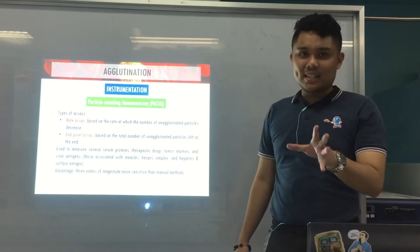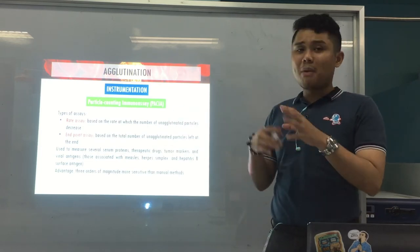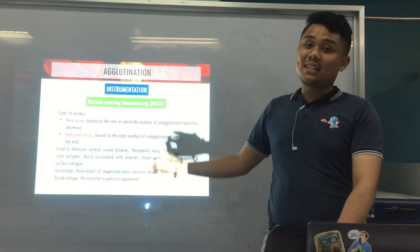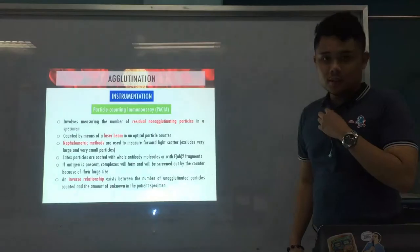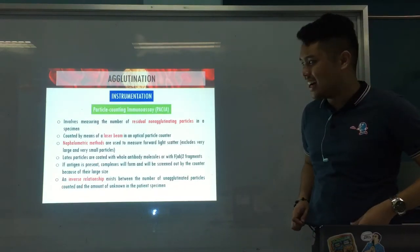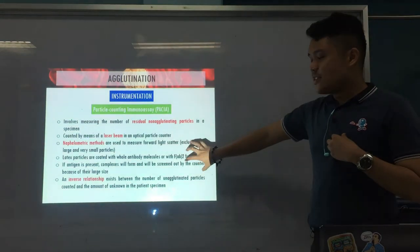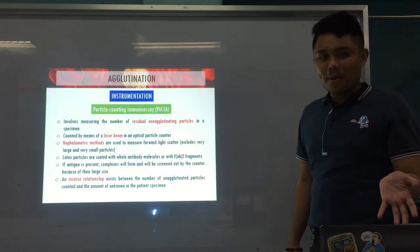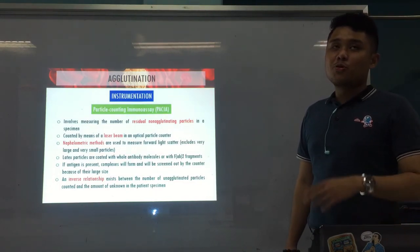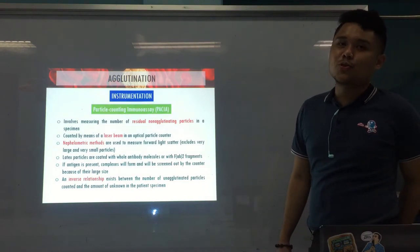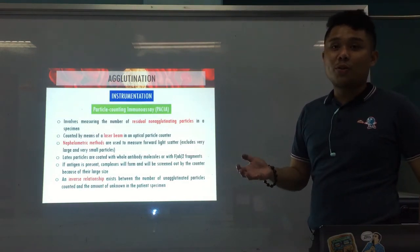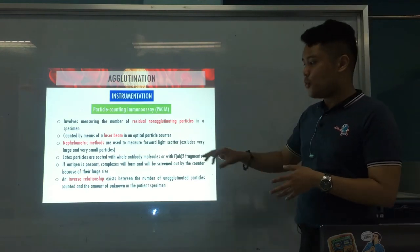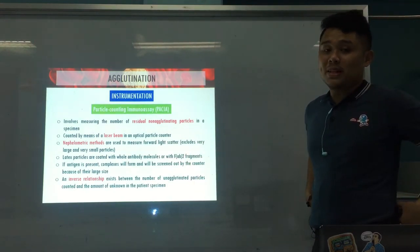Advantage of PACIA: it's three orders of magnitude more sensitive, so it can detect many more analytes. Disadvantage: it's expensive. FAb2 fragments are also used to limit interference by other antibodies and to prevent non-specific agglutination, making the test more specific.